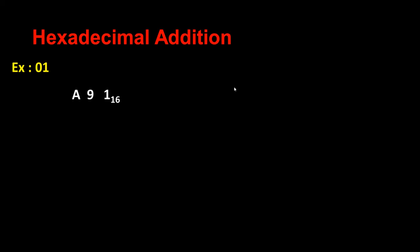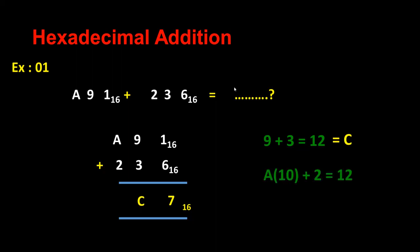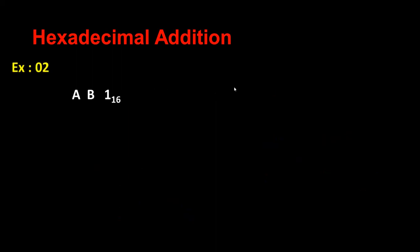Finally we are moving to hexadecimal addition. Let's do hexadecimal addition. Exercise one: A 9 1 plus 2 3 6. So 1 plus 6 answer is 7, 9 plus 3 is 12 — I can't write 12, so I write C here because C represents 12. And then A plus 2: A is 10 plus 2 is 12, again it will be C.